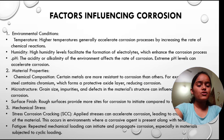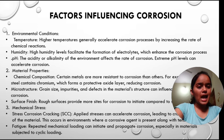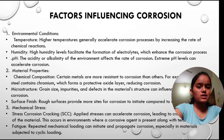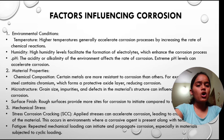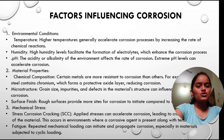Factors influencing corrosion — environmental conditions. Temperature: higher temperatures generally accelerate the corrosion process by increasing the rate of chemical reactions. Humidity: high humidity levels facilitate the formation of electrolytes which enhance the corrosion process. pH: the acidity or alkalinity of the environment affects the rate of corrosion, and extreme pH levels can accelerate corrosion.